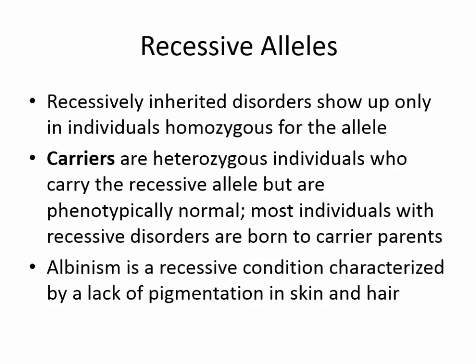Recessively inherited disorders show up only in individuals homozygous for that allele. Carriers are heterozygous individuals who carry a recessive allele but are phenotypically normal. Most individuals with recessive disorders are born to carrier parents. For example, albinism is a recessive condition characterized by the lack of pigment in skin and hair.